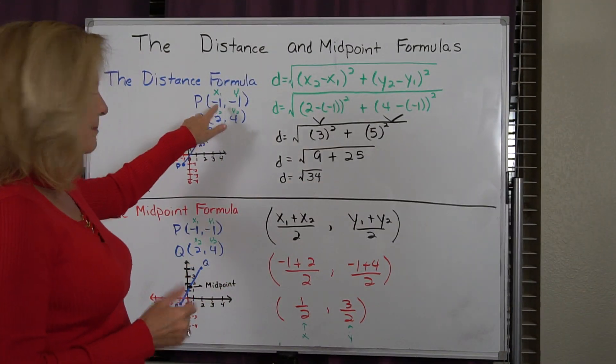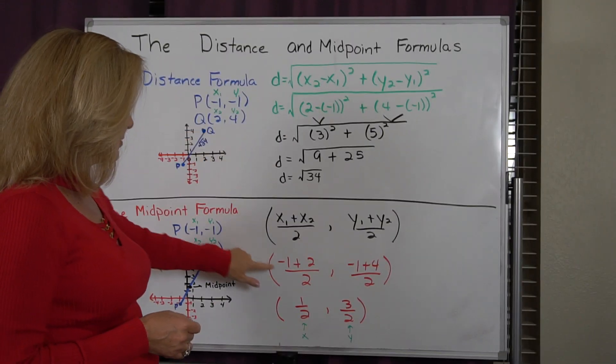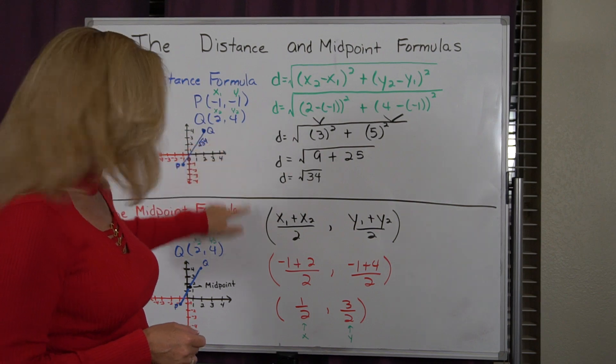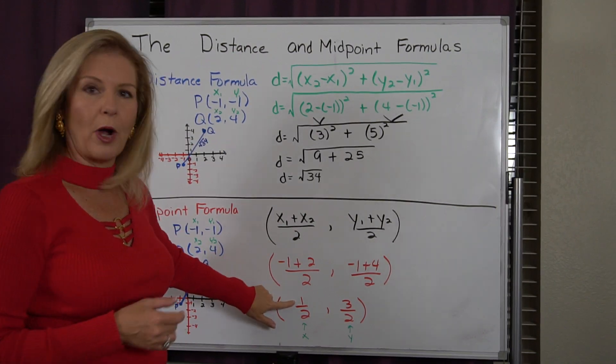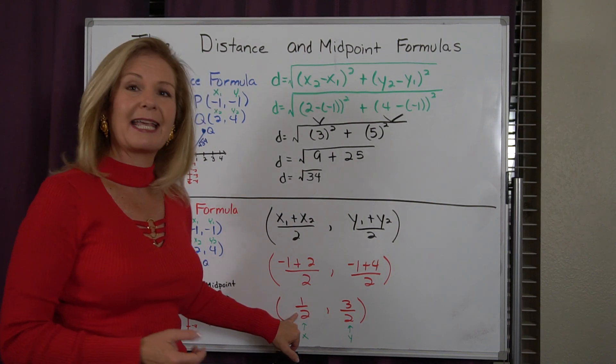So I go back, and I'm going to use the same values. So I'm going to do -1 plus 2, and I get 1. Now I'm going to cut it in half. So I take it as 1/2.